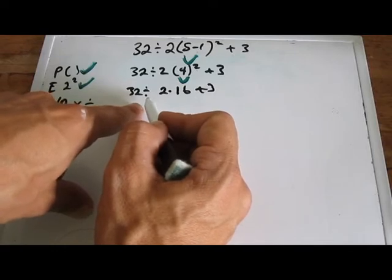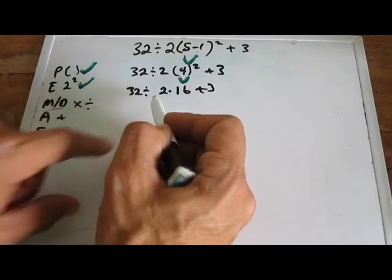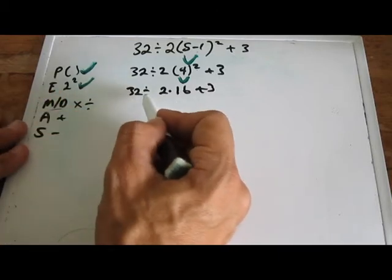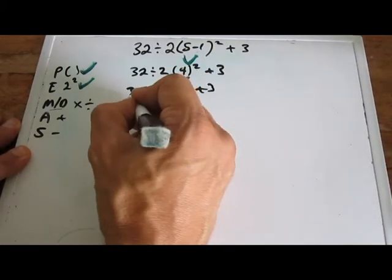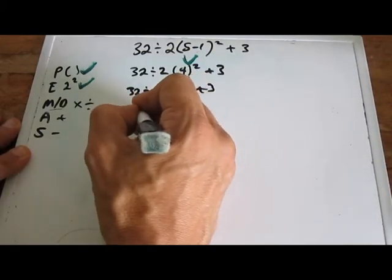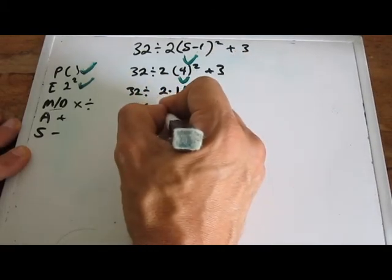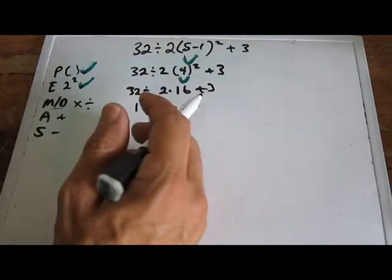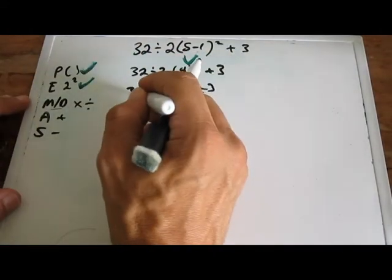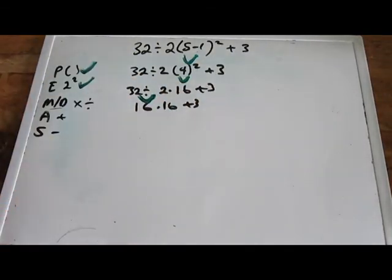If instead, multiplication showed up on the left, then you do multiplication first. So, since division shows up first left to right, that means that's what we're going to do right now. So we're going to take 32 divided by 2 and we get 16 times 16 plus 3, right? Okay. So now we're going to again put our check here. So we know that we did 32 divided by 2 to get 16.